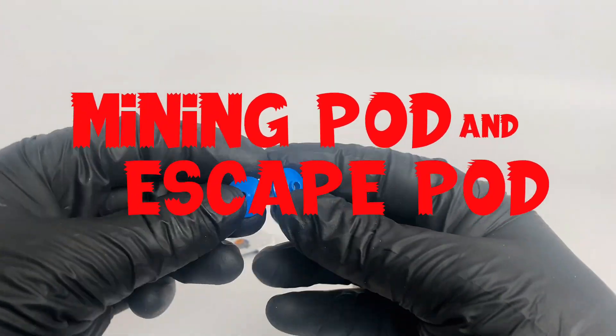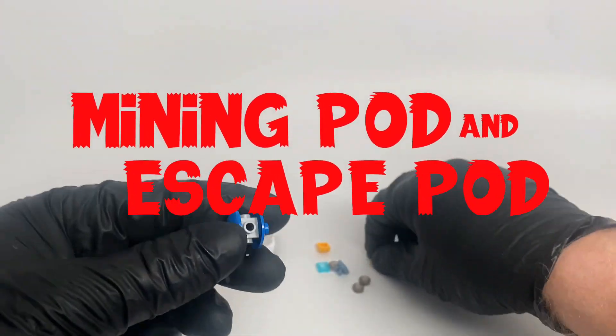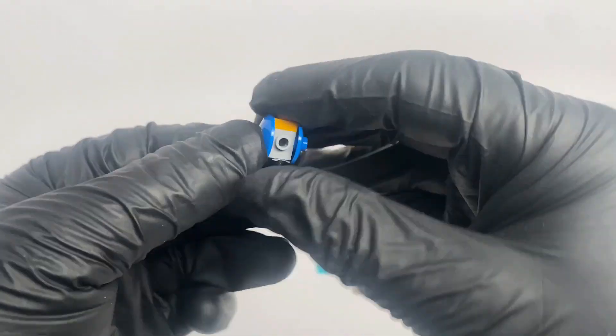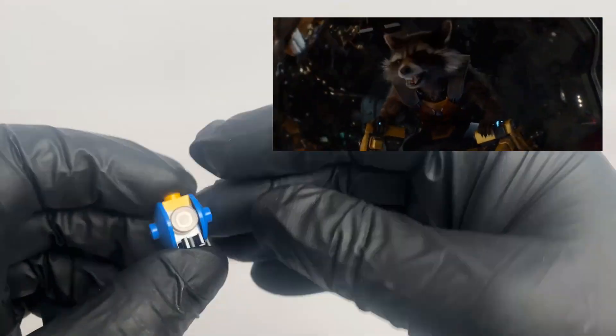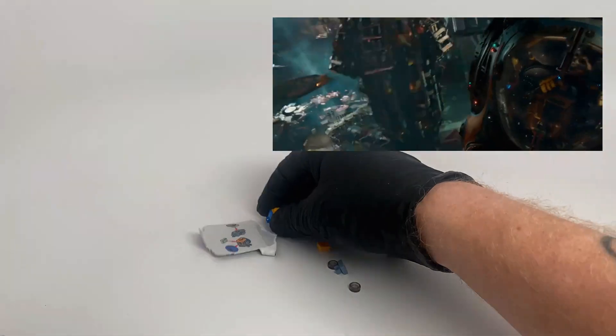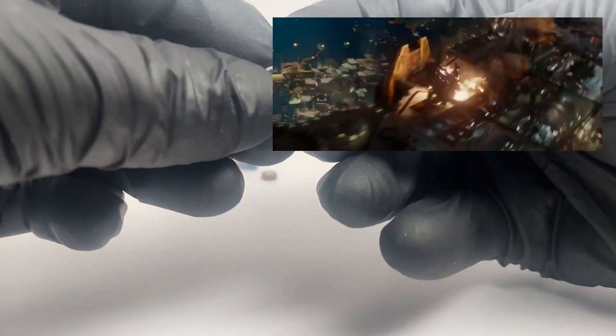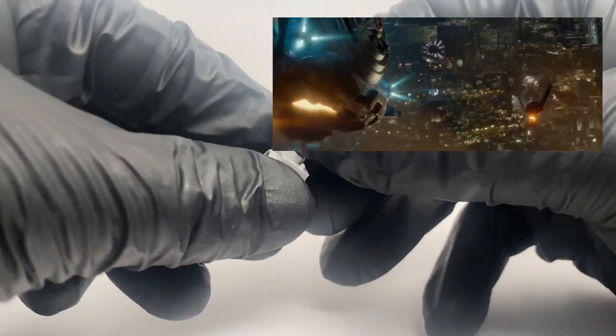We get a pair of mini builds, both a mining pod and an escape pod. Which means kids might find it fun to recreate the movie's iconic escape sequence using this pair of space vehicles. But we ain't kids.